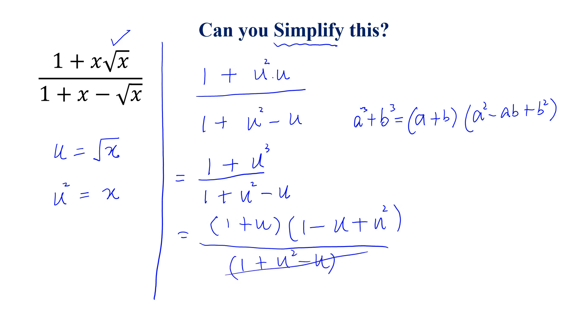So this is cancelled with this, and this is equal to 1 plus u, and u is equal to square root of x. So this is equal to 1 plus square root of x. And this is the simplification.